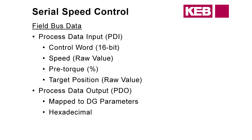Not only are we looking for values coming from the controller, we're also sending values back out to the controller, because the controller is expecting certain outputs from our drive. Those are referred to as PDOs — process data outputs. They are mapped to DG parameters in the drive. The DG parameter list contains parameters used for diagnostics; they are read-only. If you're using Comodo Viz, these are the parameters you would scope, and they are in hexadecimal format. So anytime we're dealing with serial, we're likely entering a hex number.